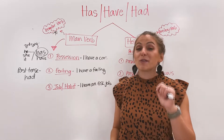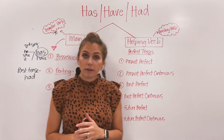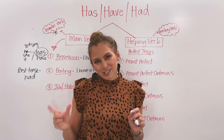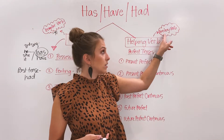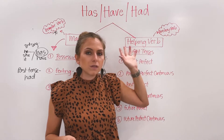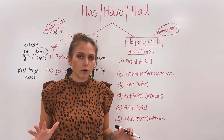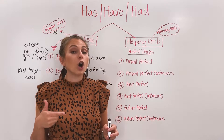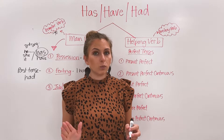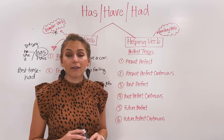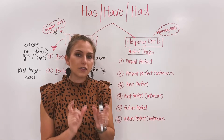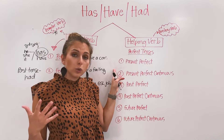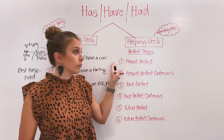That's the easier part. For the more difficult part, we're going to talk about the helping verb. Has, have, and had can also function as a helping verb — sometimes called an auxiliary verb. This means it is not the main verb, but it is helping another verb in the sentence. We use have as a helping verb in all of our perfect tenses. These are the six tenses where you will use have as a helping verb.